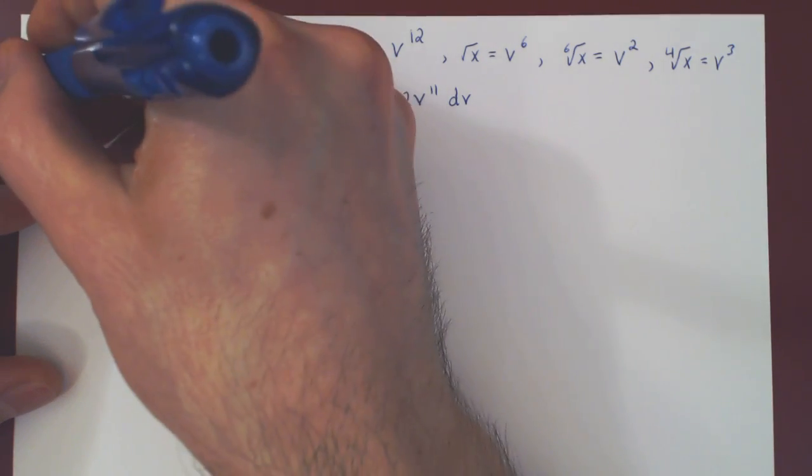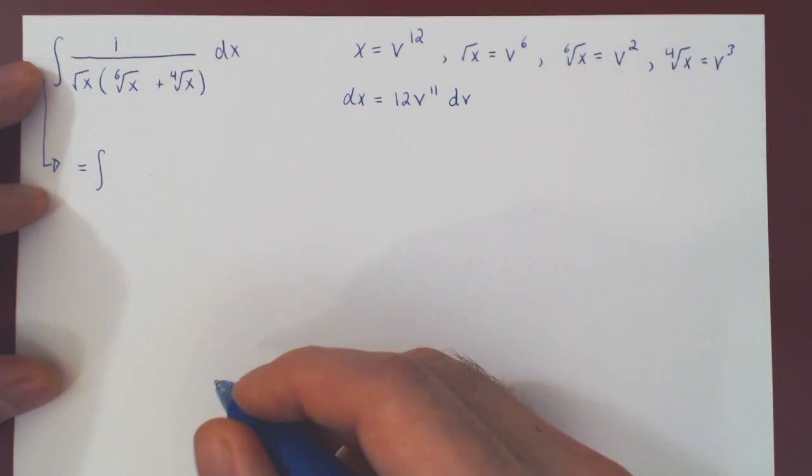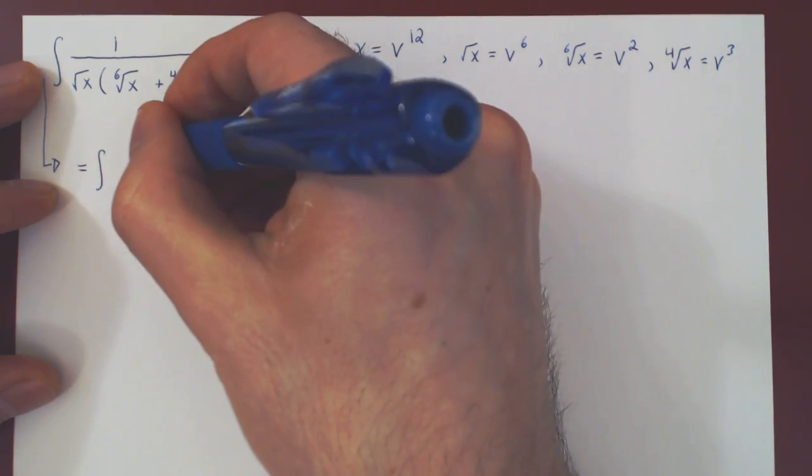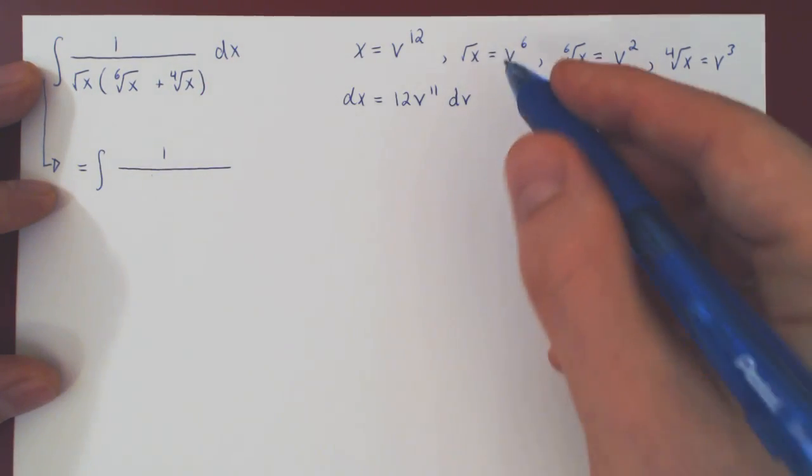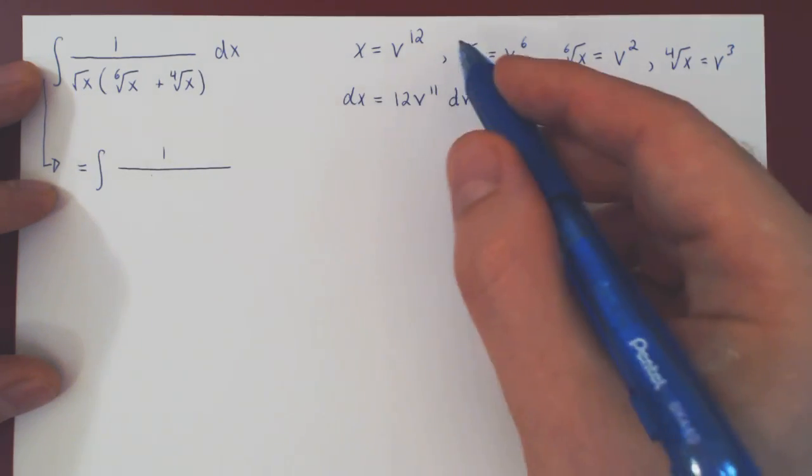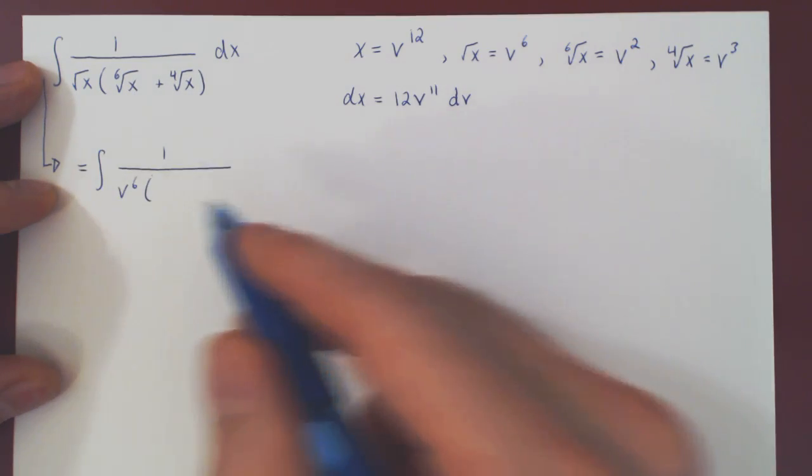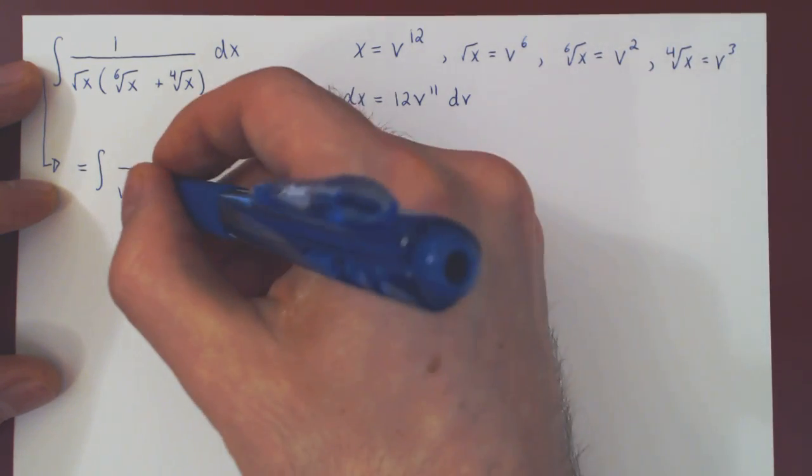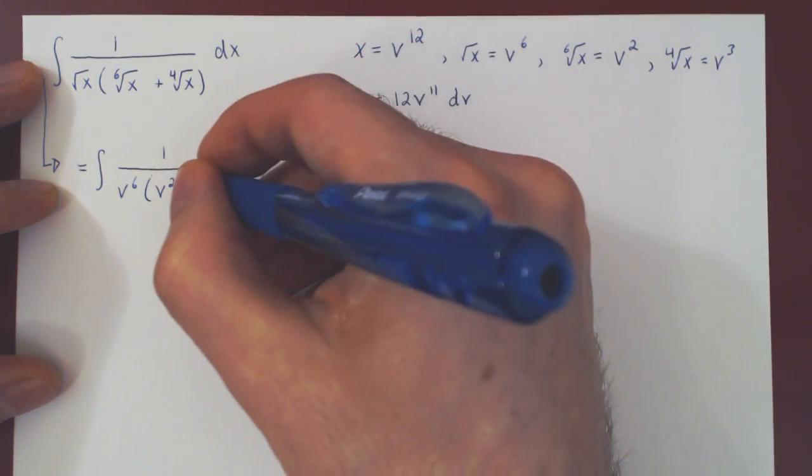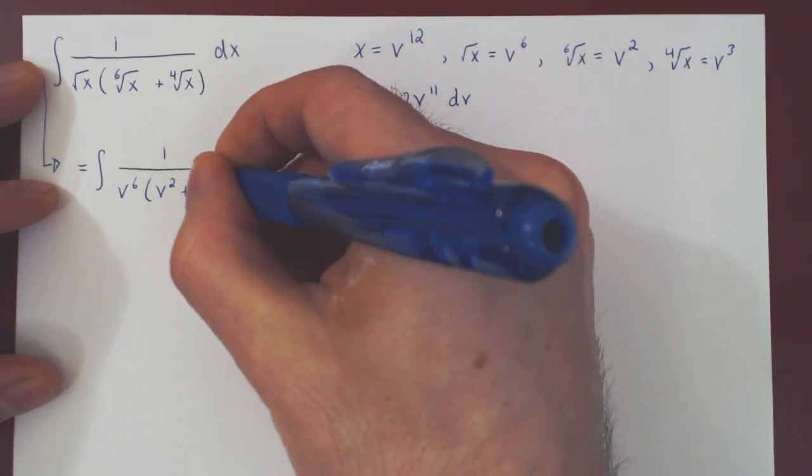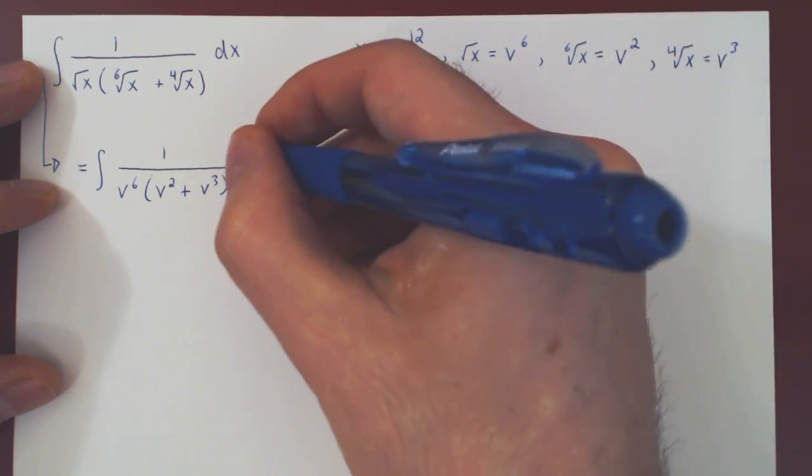And now we can make our substitution. So what do we have? 1 over the square root of, v to the 6, v to the sixth power, times the sixth root of x, v squared, plus the fourth root of x, v cubed, times of course dx, which is 12 v to the 11 dv.